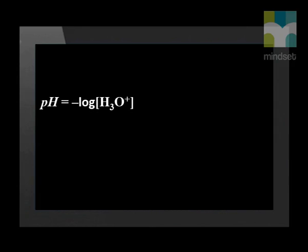Therefore, the pH of water can be given by the negative log of the hydronium ion concentration, and substituting 10 to the exponent negative 7 gives an answer of 7. So the pH of water is 7.